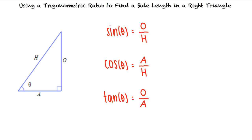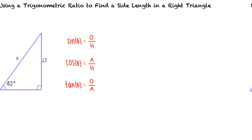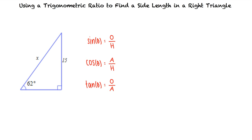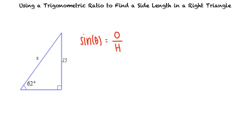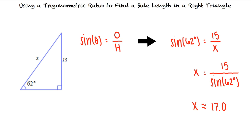Let's take a look at an example problem. In this problem, we are given the length of the side opposite the angle and we need to find the hypotenuse. So this means we will use the sine ratio. We can substitute in our known values and solve for x. Using our calculator, we see that the length of the hypotenuse is approximately 17.0.